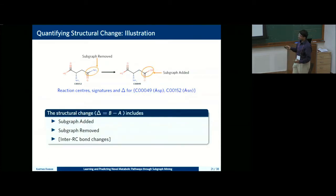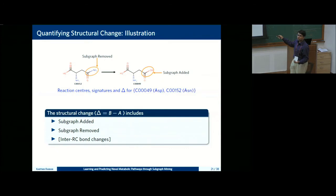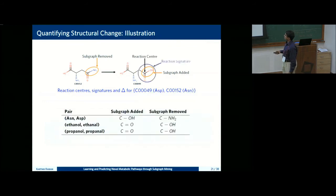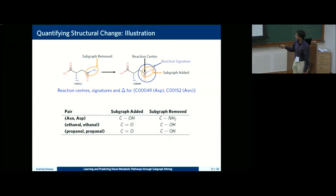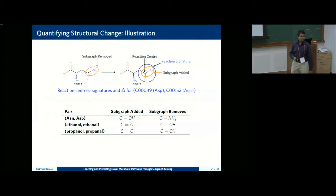We look at the structural change: a subgraph being removed from the left-hand side and a subgraph being added on the right-hand side. For example, asparagine to aspartic acid: C-OH is added at the cost of C-NH₂. For alcohol dehydrogenase: ethanol becomes acetaldehyde — C-OH becomes C=O. Similarly for propanol. For each pair A→B, we store the rule comprising the reaction center, reaction signature, overall structural change, and any helper reactants (co-factors).